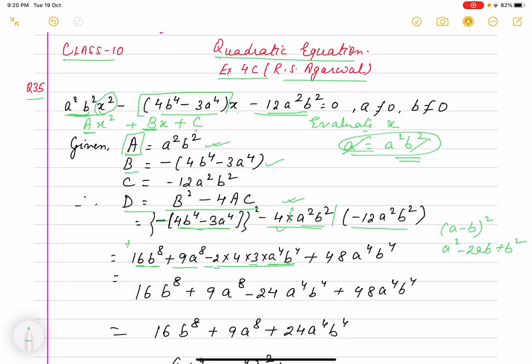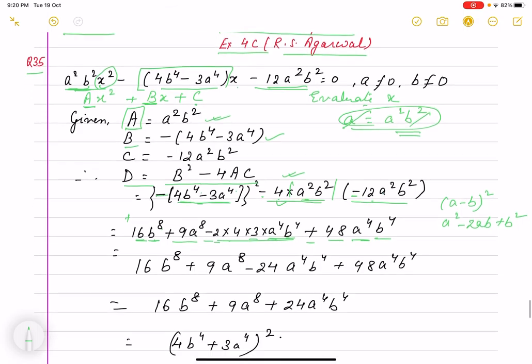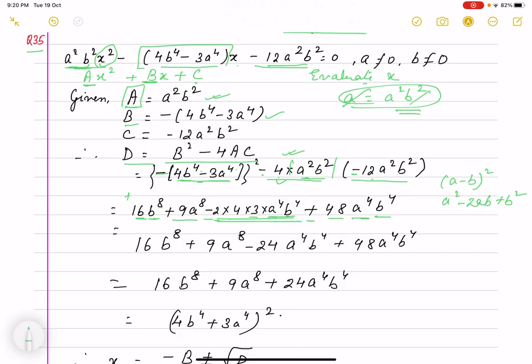When we multiply, 4 × 12 = 48, and minus times minus gives plus, so we get +48a⁴b⁴. Combining like terms: -24a⁴b⁴ + 48a⁴b⁴ = 24a⁴b⁴.